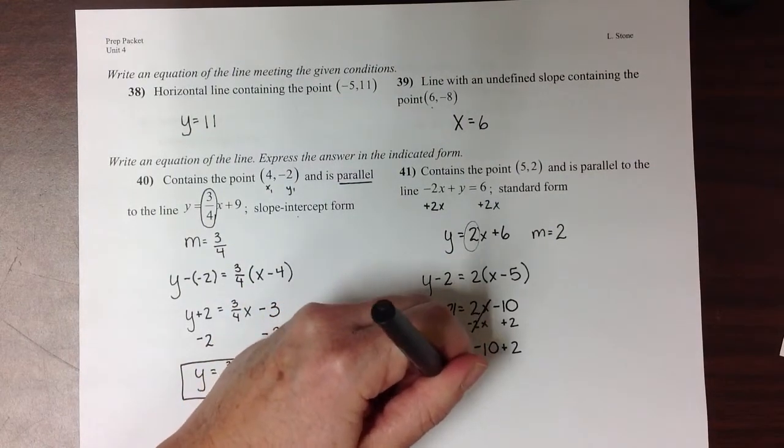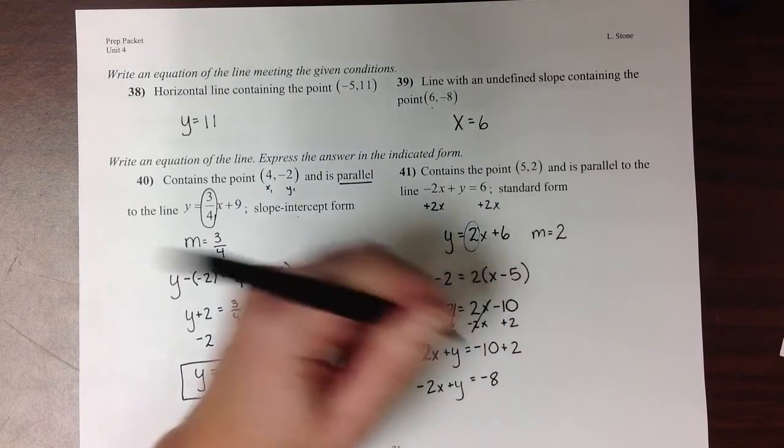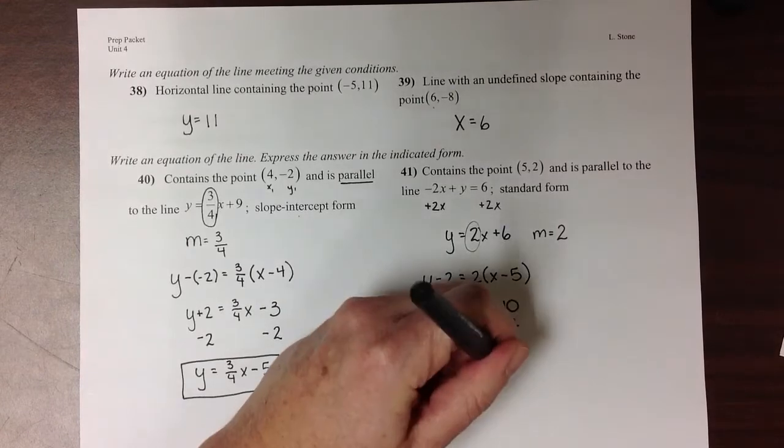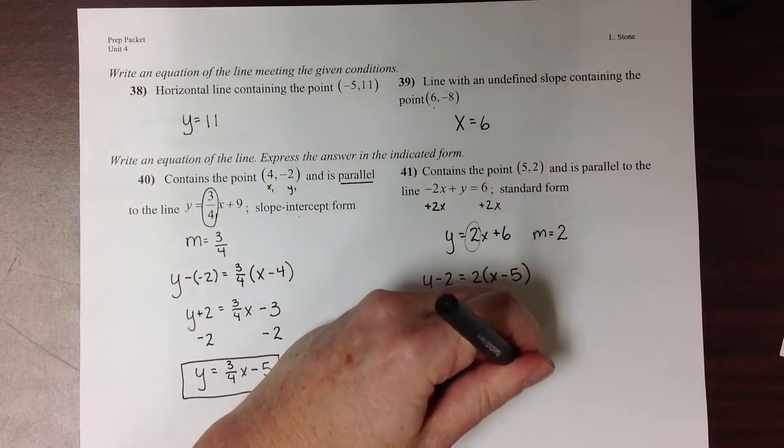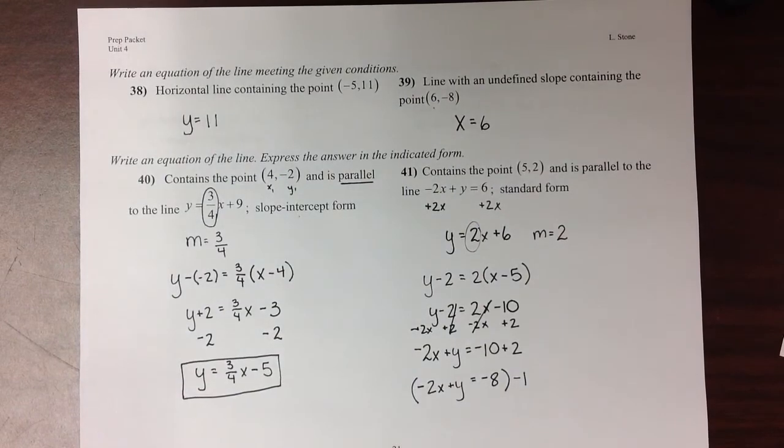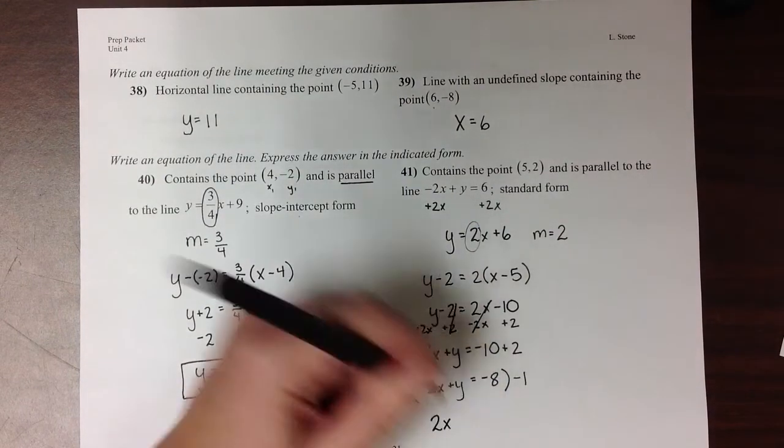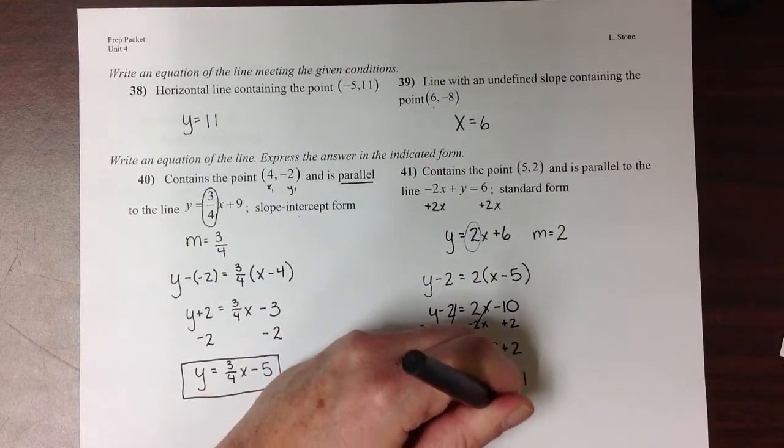Combining those like terms, I get negative 2x plus y equals negative 8. And then I need only one more step to get this in standard form, and that's to get that negative 2 to turn positive. So I'll multiply both sides of the equation by negative 1. That gives me a final answer of 2x minus y equals 8.